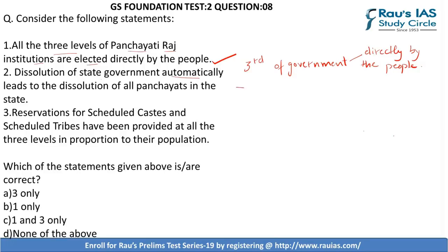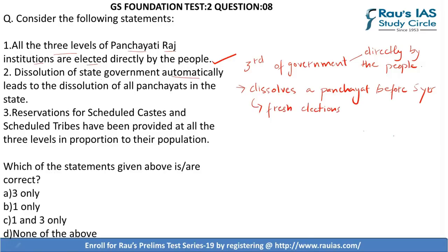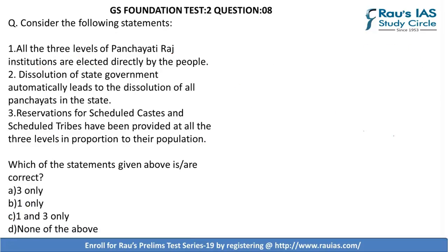If the state government dissolves the Panchayat before the end of its five-year term, fresh elections to the Panchayat must be held within six months from the date of such dissolution. This further points to the fact that governance of local bodies is independent of the state government. Thus, the second statement is wrong. Third — reservation for Scheduled Castes and Scheduled Tribes has been provided at all three levels in proportion to their population — is also correct. Hence, the correct answer is C — 1 and 3 only.